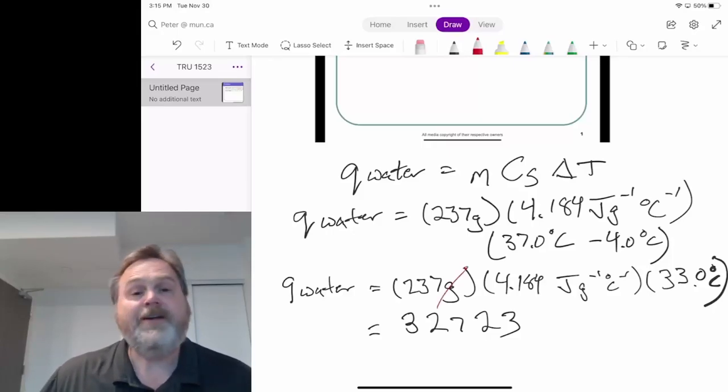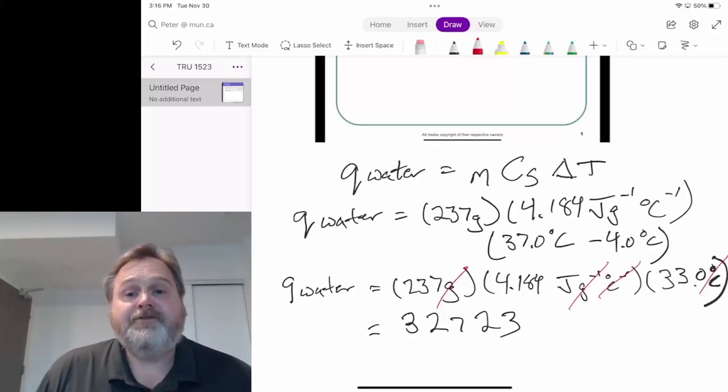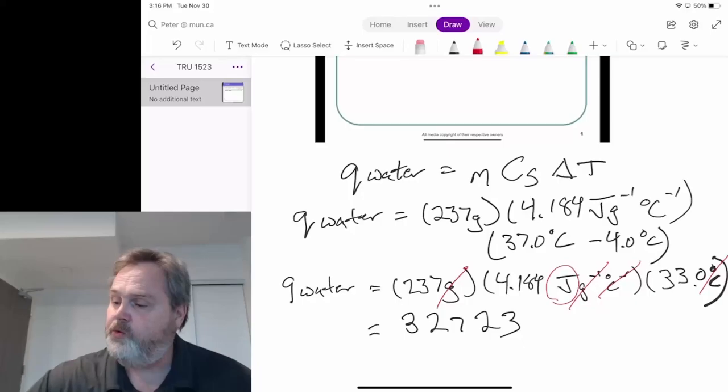Here we have gram units, the mass of our water, but we see our heat capacity has per gram units that are going to cancel out. We also have our per degree Celsius units in that specific heat capacity and our degree Celsius units here in our temperature change. So the only unit we have left is joules, which means this is in joules.